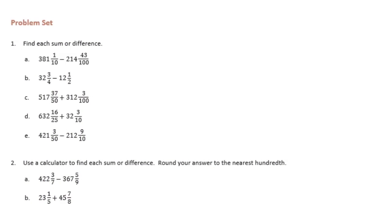Sixth grade module 2 lesson 9 problem set. Find each sum or difference. Remember we're putting these in decimal form in our answer. So I'm going to start with a. I'll start up here. So 381 and 1 tenth minus 214 and 43 hundredths. Now since this 43 hundredths goes to the hundredths place, I'm going to write it in decimal form.